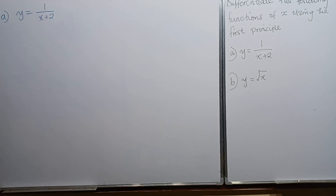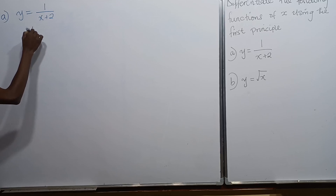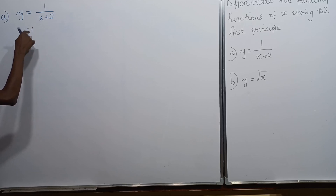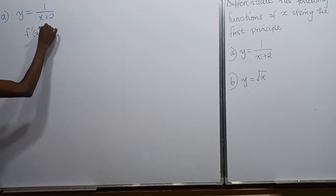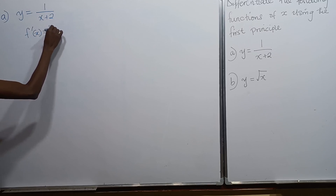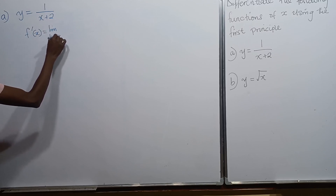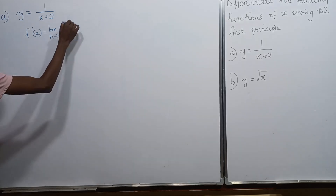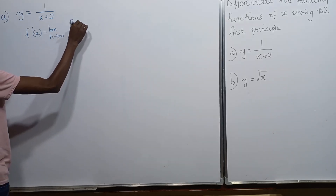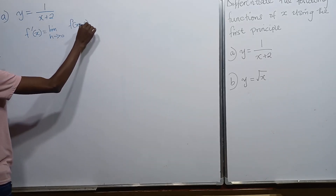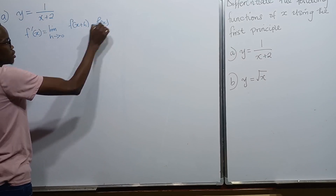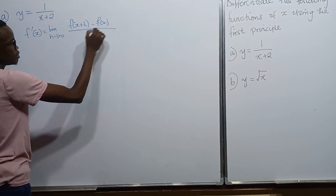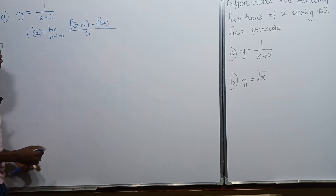First things first, the formula we use for the first principles is: f prime of x is equal to the limit as h approaches 0, of f of x plus h minus f of x, divided by h.